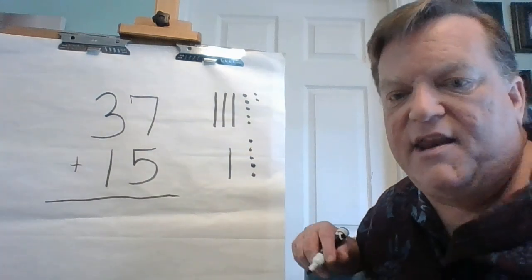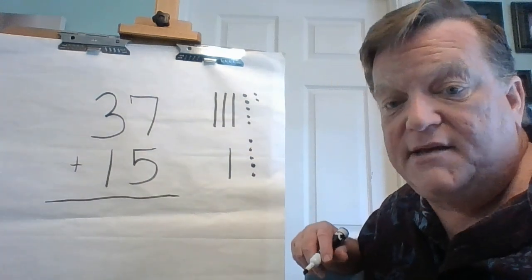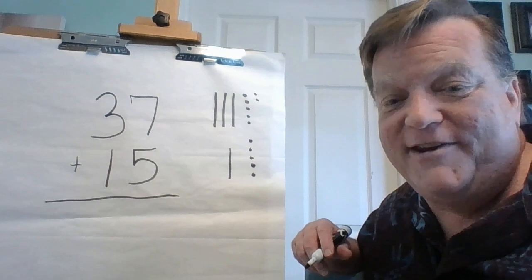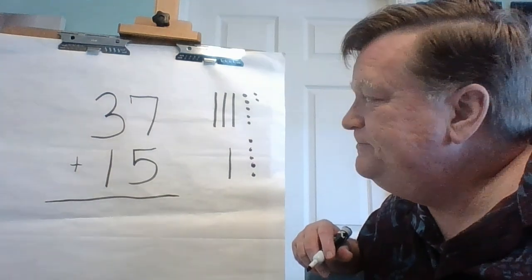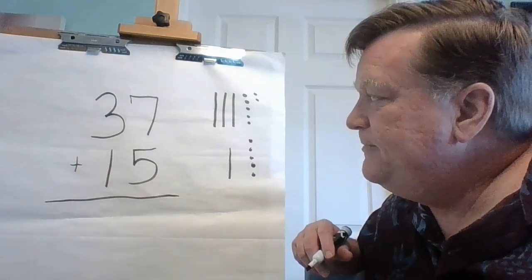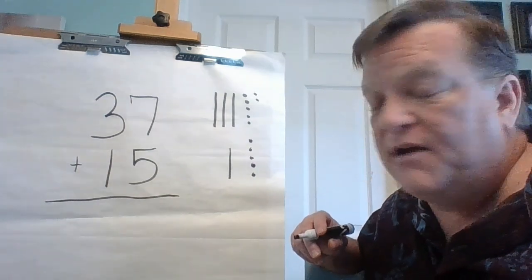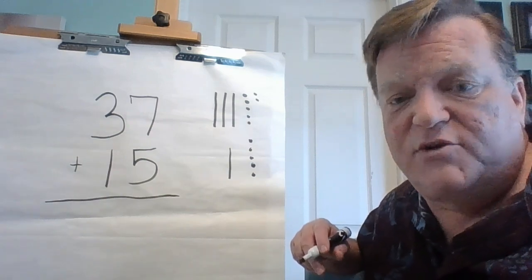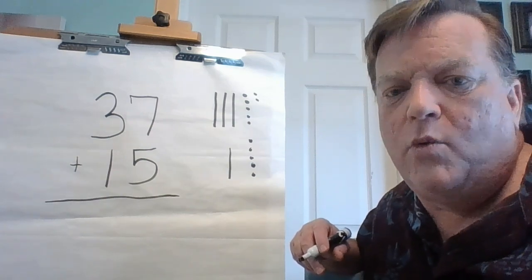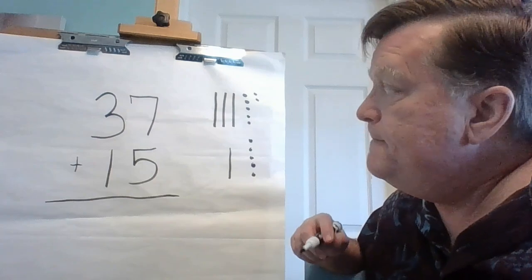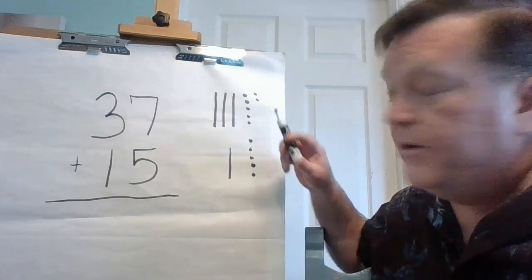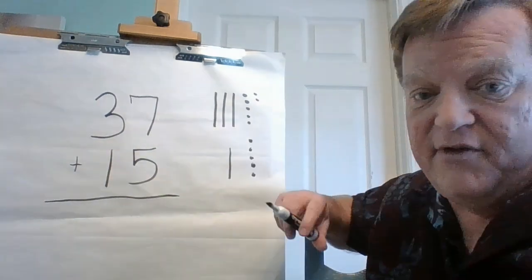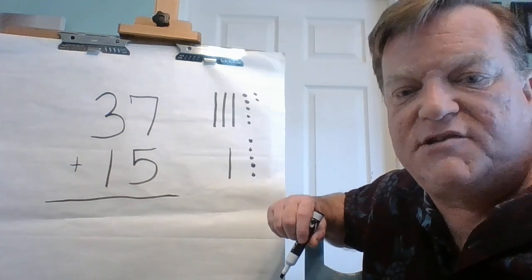If you haven't had a chance to write that down, hit pause and I'll wait while you finish copying it down. Okay, so the first thing we're going to do whenever we do addition or subtraction is we always start with the ones. So let's take a look — I'm going to do it with our model and then write it over here. The first thing I'm going to do is add my ones.